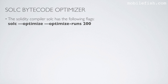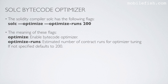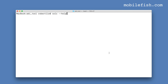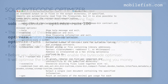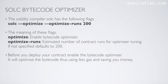The Solidity compiler SolC has the following flags: the OPTIMIZE and the OPTIMIZE-RUNS flag. OPTIMIZE means enable bytecode optimizer and OPTIMIZE-RUNS means estimated number of RUNS for optimizer tuning. If not specified it defaults to the value 200. If you have installed the Solidity compiler, type 'solc --help' and here you will find these two flags. Before you deploy your contract, enable the bytecode optimizer — it will optimize the bytecode, thus using less gas and saving you money.